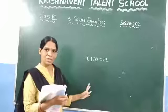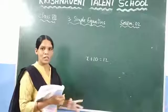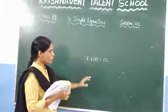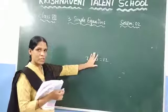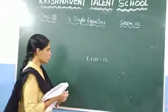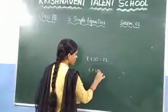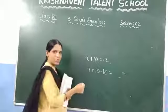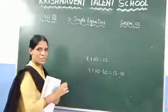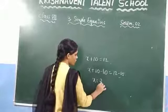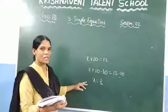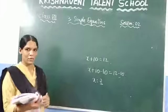The third method is the non-transposition method, where you need not change the position. Without changing the position, you find the value of the variable x. If plus 10 is there and you want to remove it, you subtract minus 10 from both sides. So x plus 10 minus 10 equals 12 minus 10, and since 10 minus 10 equals 0, you get x equal to 2. These are the 3 methods discussed.